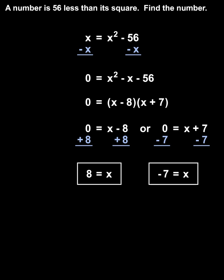It's important to understand that both of these answers work. Plugging an 8 back into the original problem, we have 8 is 56 less than 8 squared, or 8 equals 8 squared minus 56, which simplifies to 8 equals 64 minus 56, or 8 equals 8, which is a true statement.